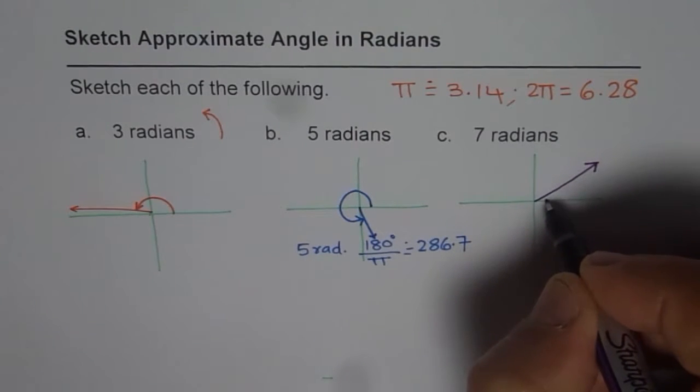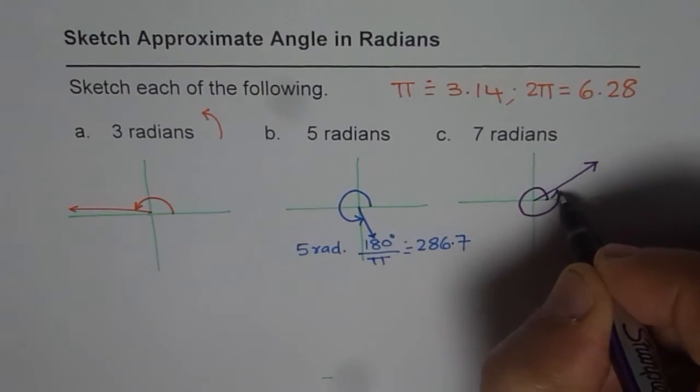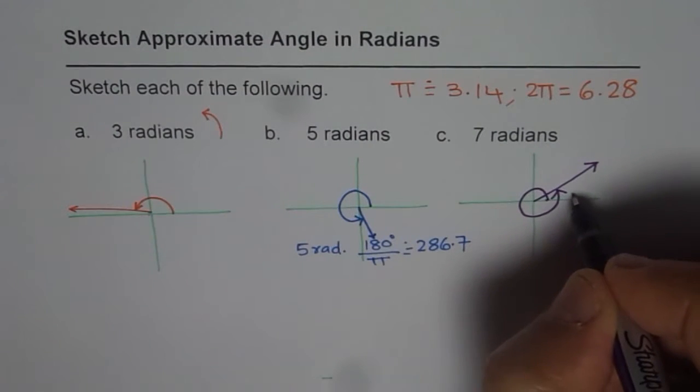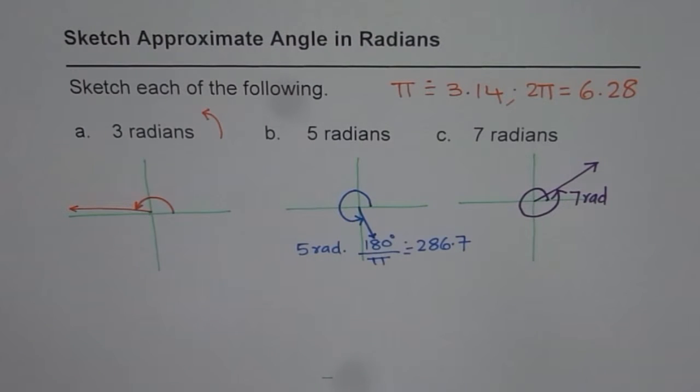So that should be the location of 7 radians. These are all approximate values. So it will be like this. So that should be 7 radians, right. So that is how we can approximate.